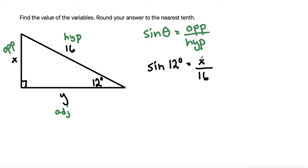So now what we can do to solve for x is to multiply both sides by 16. That cancels out the 16 on the denominator and just leaves us with x.